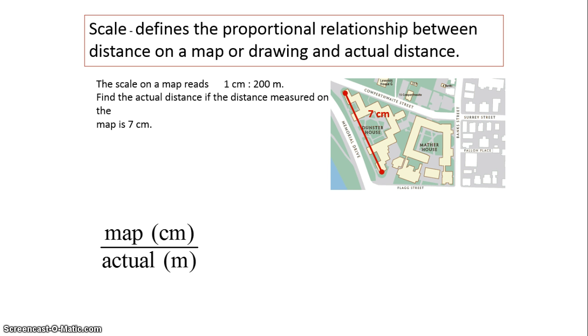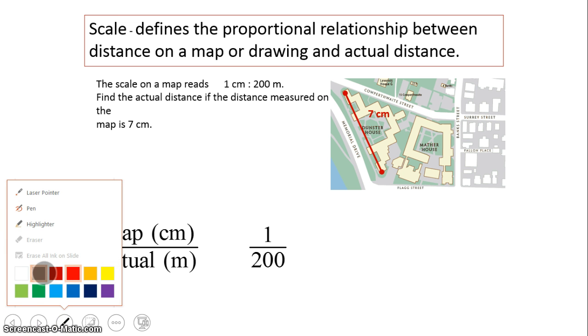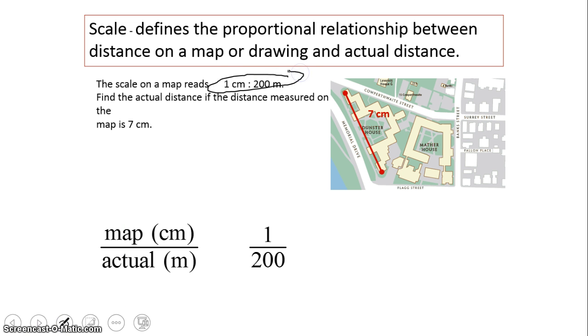So I'm going to simply take the first ratio which comes from my scale here, which is 1 centimeter by 200 meters. That is our scale that is always going to be one of the ratios that we're going to write, and I do want to apologize again for the writing. I'm still waiting for my new stylus to come in, so it's a little bit not very good looking.